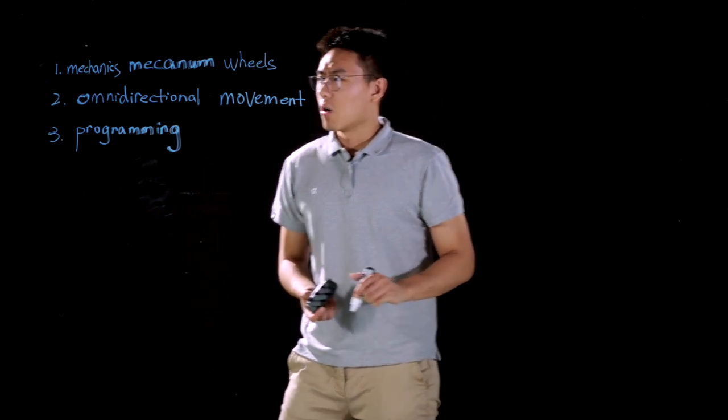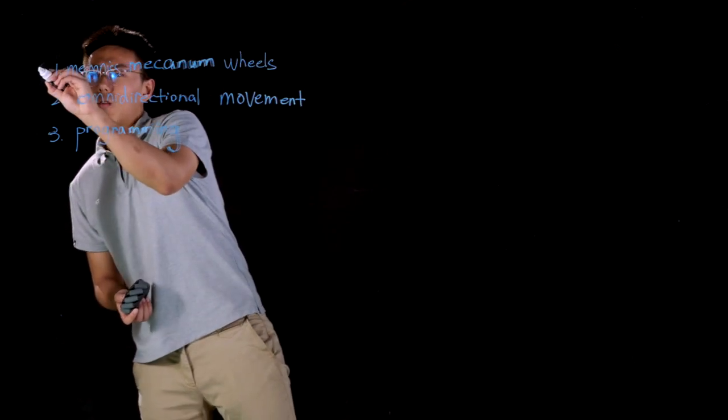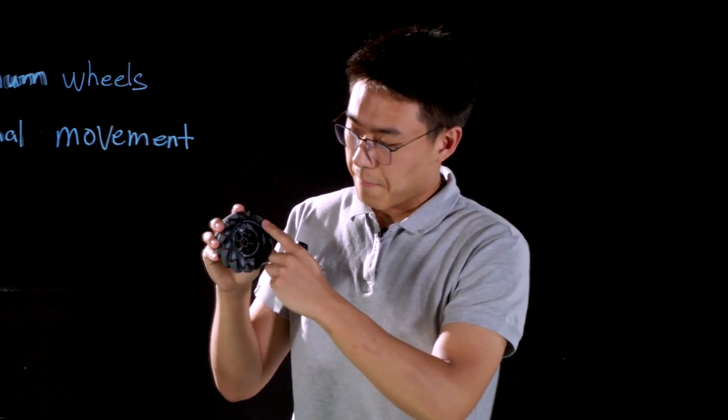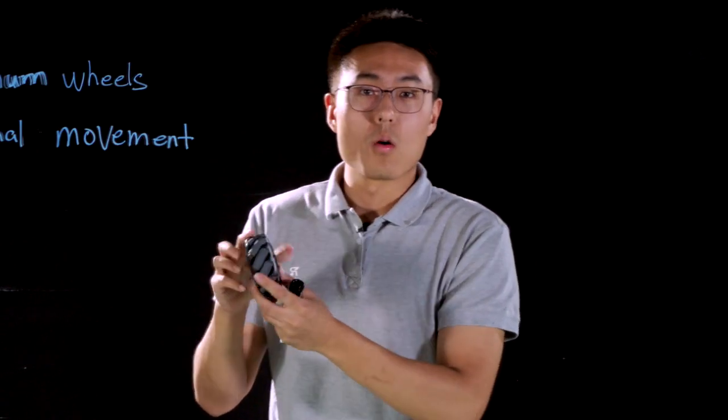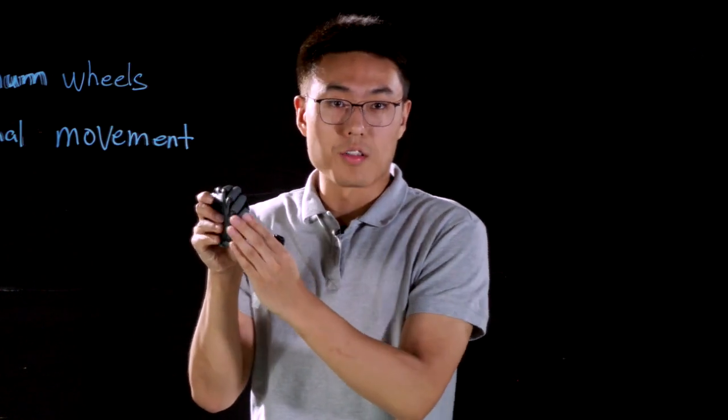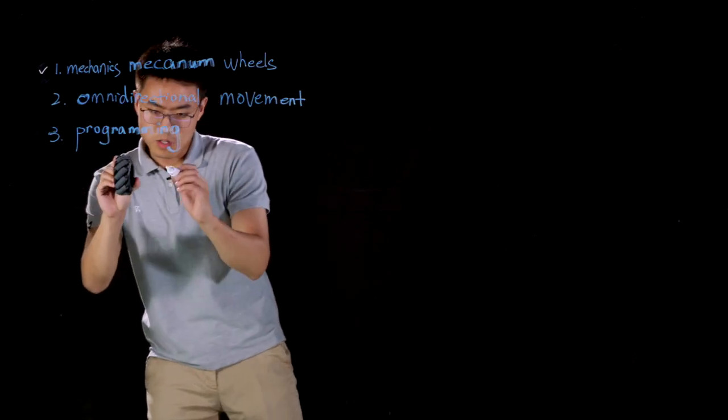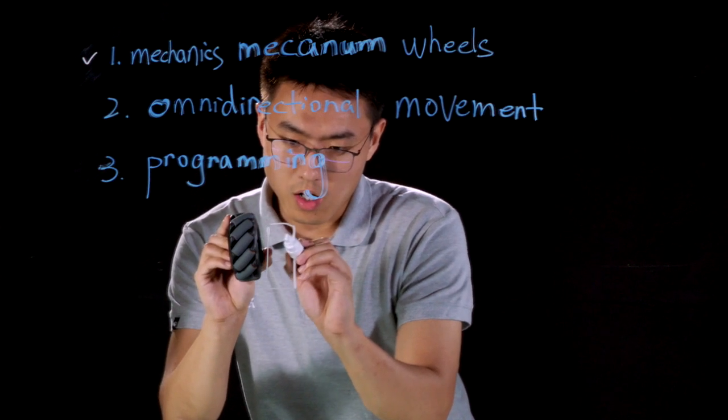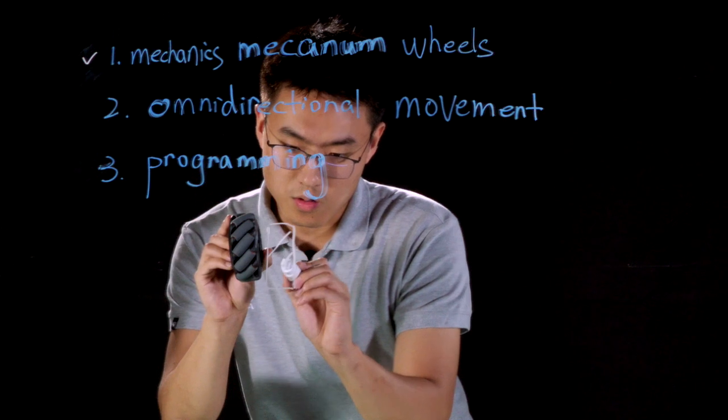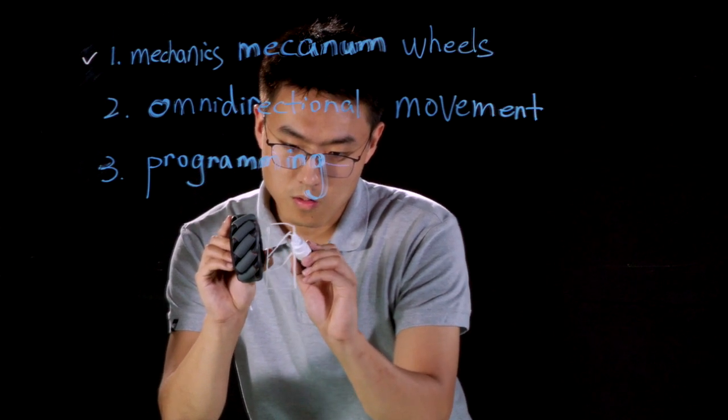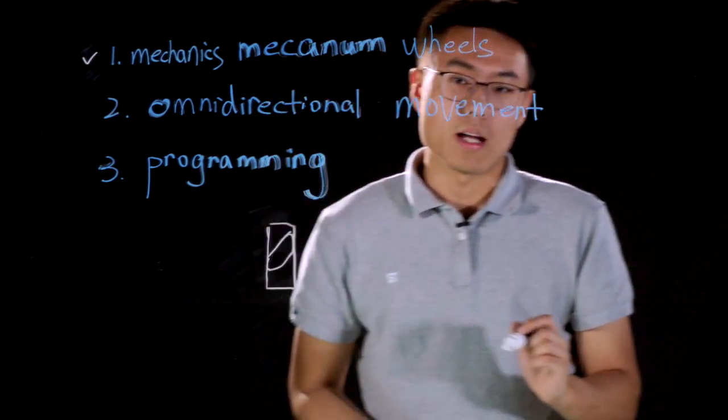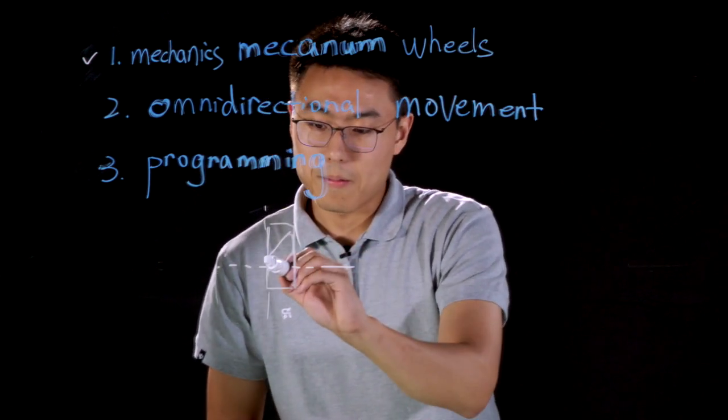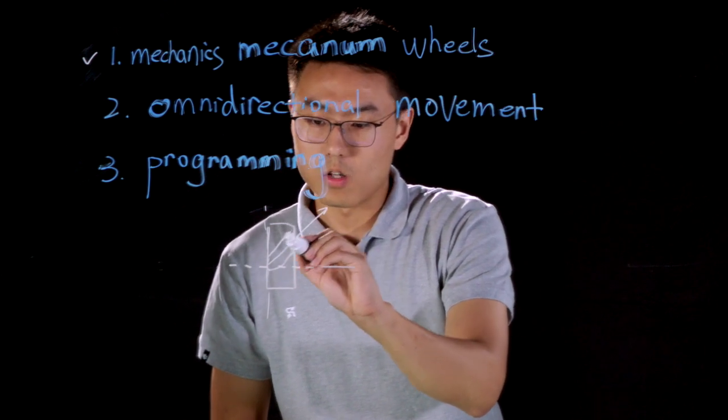First thing first, we need to know what the Mecanum wheel is. A Mecanum wheel has a hub with some rollers on its surface. So if this is the hub, and here are one of the rollers, you may notice that the angle between the roller and the hub is 45 degrees.